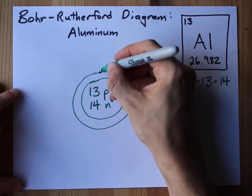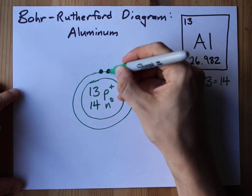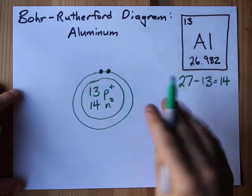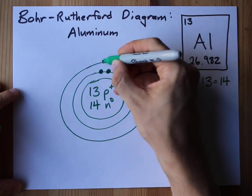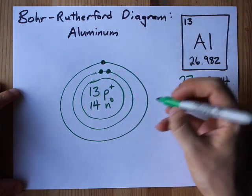First shell: 2. If that's a surprise, well then this video is probably over your head. The second shell is up to 8, so I'm going to fill it with 8 because I need 13 in total.